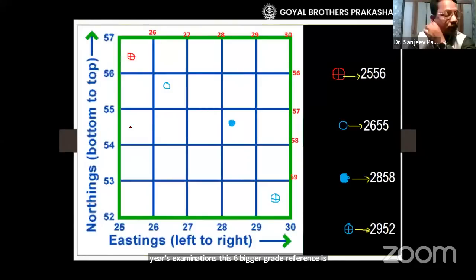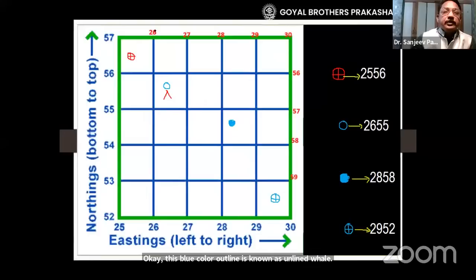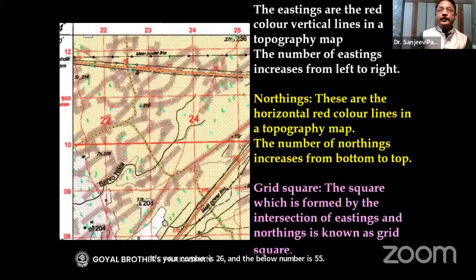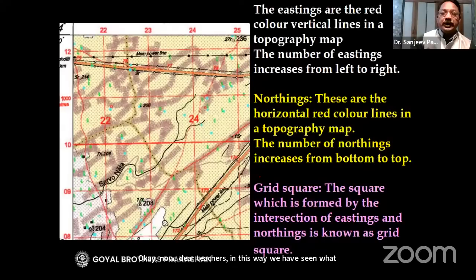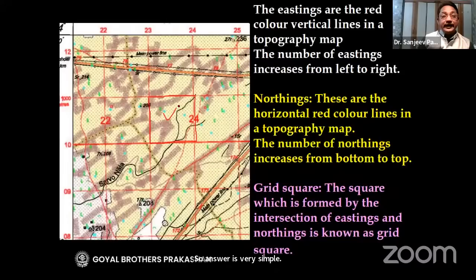For an unlined well with blue color outline, if the number is 26 and below is 55, the grid reference is 2655. So we have seen what are eastings and northings, and what is a grid square. If asked in an exam, the answer is: a grid square is a square formed by the intersection of eastings and northings.